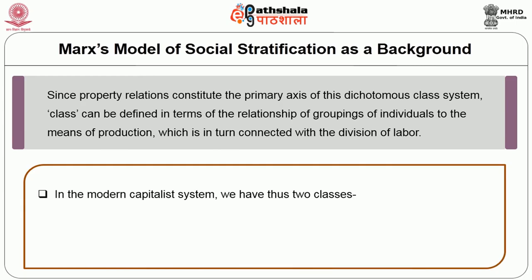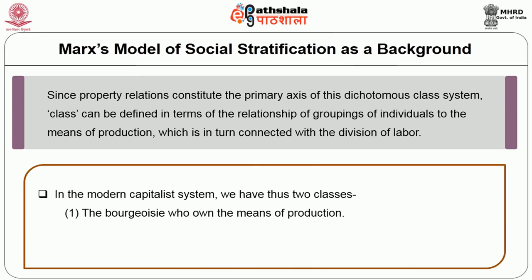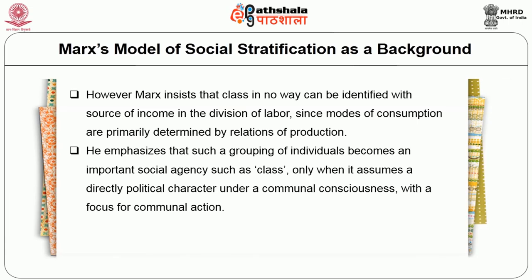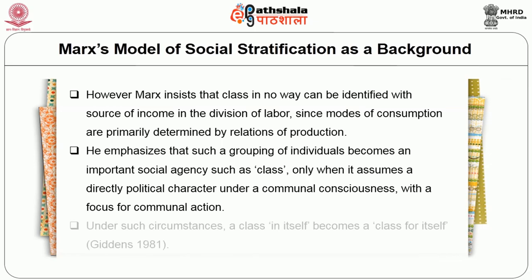In the modern capitalist system there are thus two classes: the bourgeoisie who owns the means of production, and the proletariat who provides the labour but does not own the means of production. Marx insists that classes cannot be identified with source of income alone, since modes of consumption are primarily determined by relations of production. Such groupings become an important social agency only when assuming a directly political character under communal consciousness — when a class in itself becomes a class for itself.